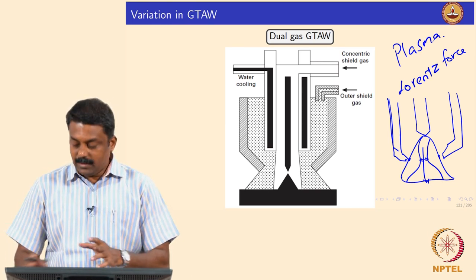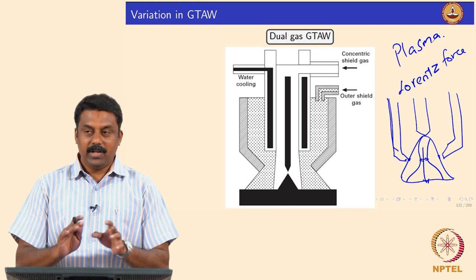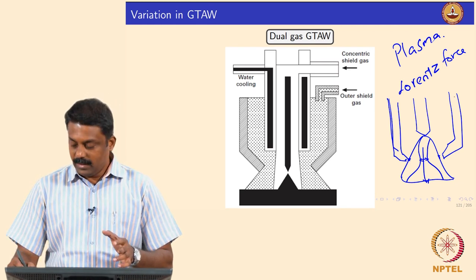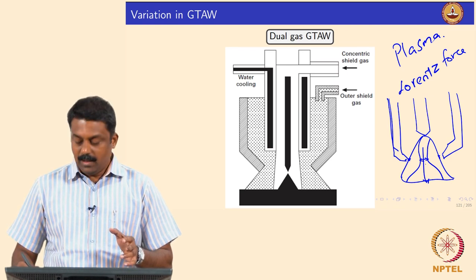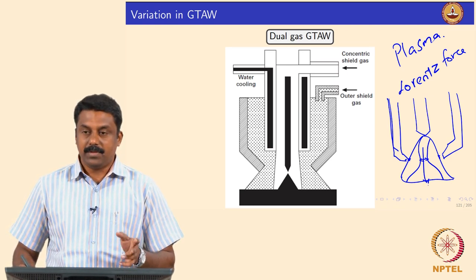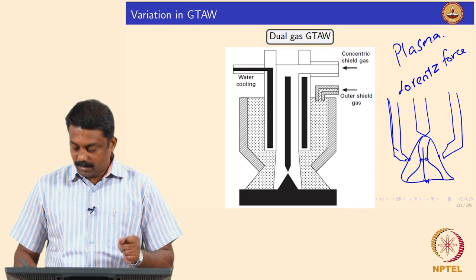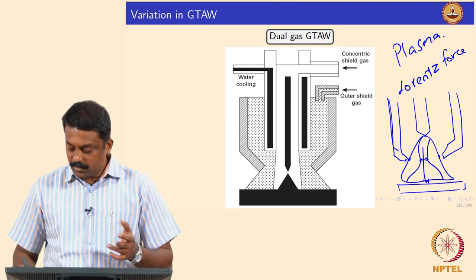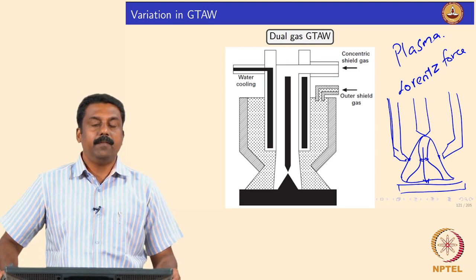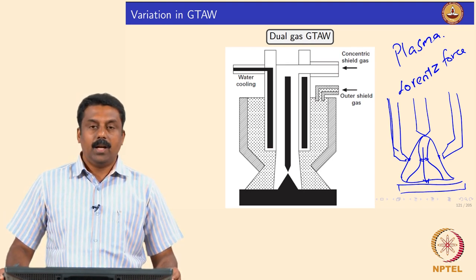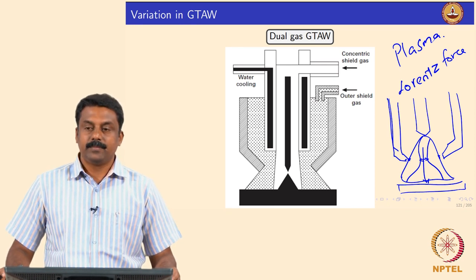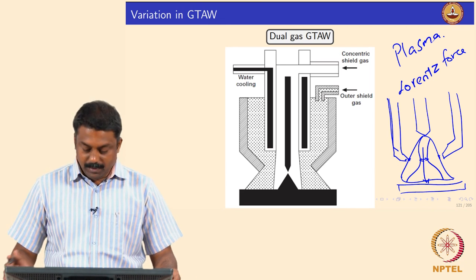That means without changing anything — without changing any arc energy, current, or voltage — by just using a simple cooling mechanism, we can increase the plasma jet formation velocities, and by doing so we can achieve very high penetration and very high arc energy.